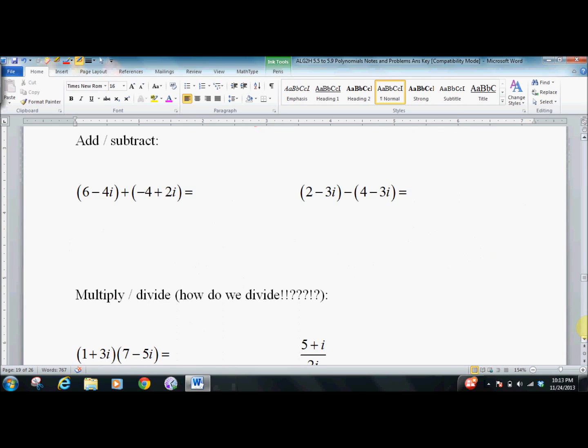So you can also add and subtract. Just add and subtract the real parts. 6 minus 4 is 2. Negative 4i plus 2i is negative 2i. Distribute your negative. 2 minus 4 is negative 2. Negative 3 plus 3i is gone.